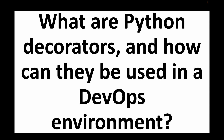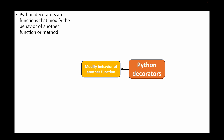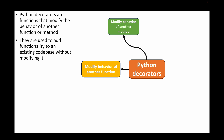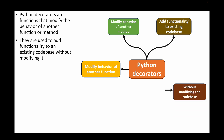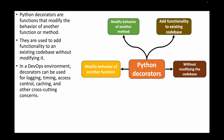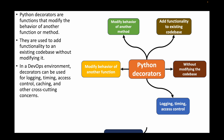The first question is: what are Python decorators and how can they be used in a DevOps environment? Decorators can be used when you want to modify the behavior of another function or method. Decorators are also functions, but we can use them to modify the behavior of other functions without modifying the code itself. We can use this to add functionality to your existing code base without modifying it, and in a DevOps environment decorators can be used for logging, timing, access control, caching, and other cross-cutting concerns.